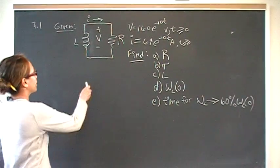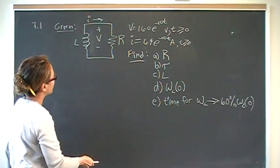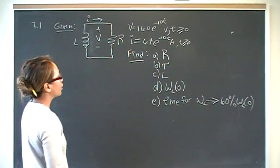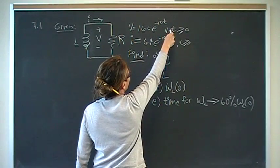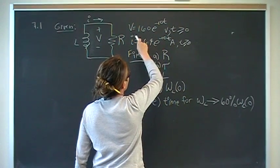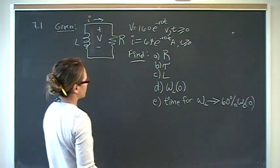And we have a circuit here. There's an inductor and a resistor. Current is going in that direction and voltage. We're given the voltage function is 160e to the negative 10t volts and current is 64e to the negative 10t amps.